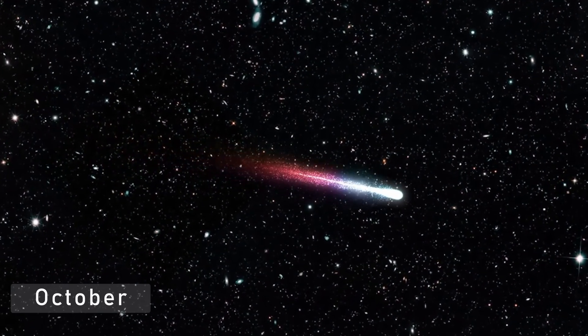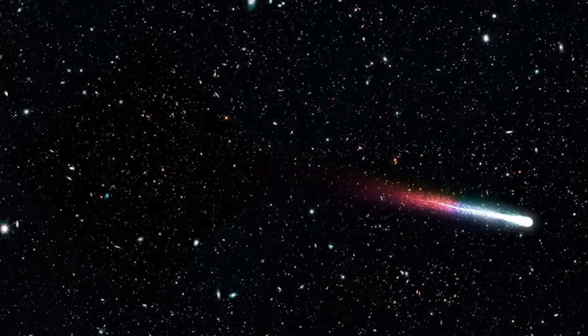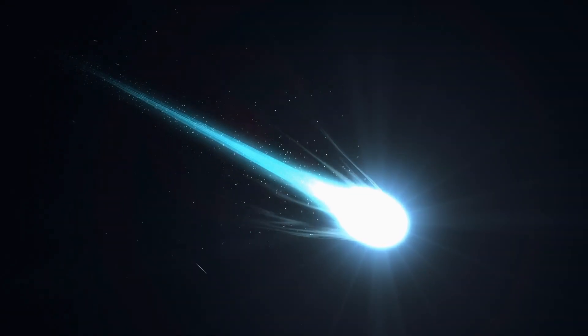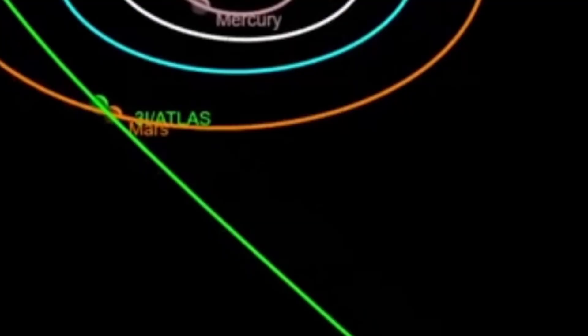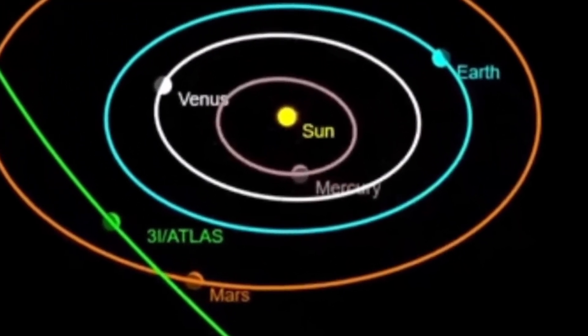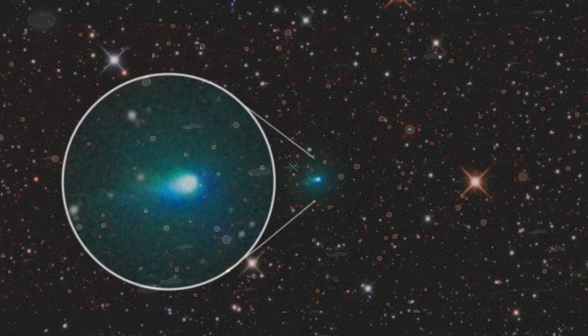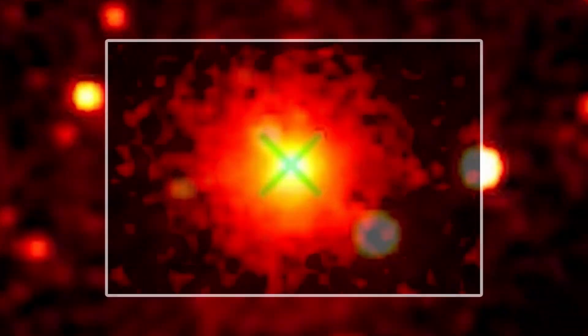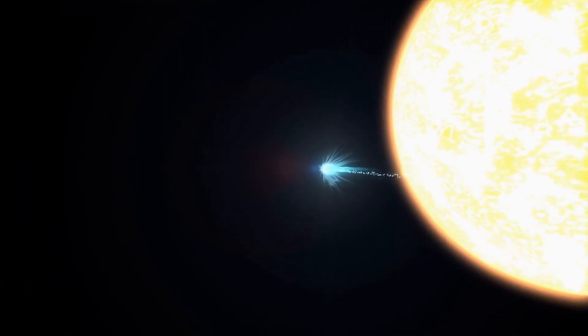By October, 3i Atlas had crossed Mars' orbit, accelerating toward the Sun, and then it disappeared. From Earth's perspective, the comet passed behind the Sun for nearly two weeks. No telescope could see it. No radar could ping it. It entered what astronomers call the blackout zone, the exact region where data goes dark.